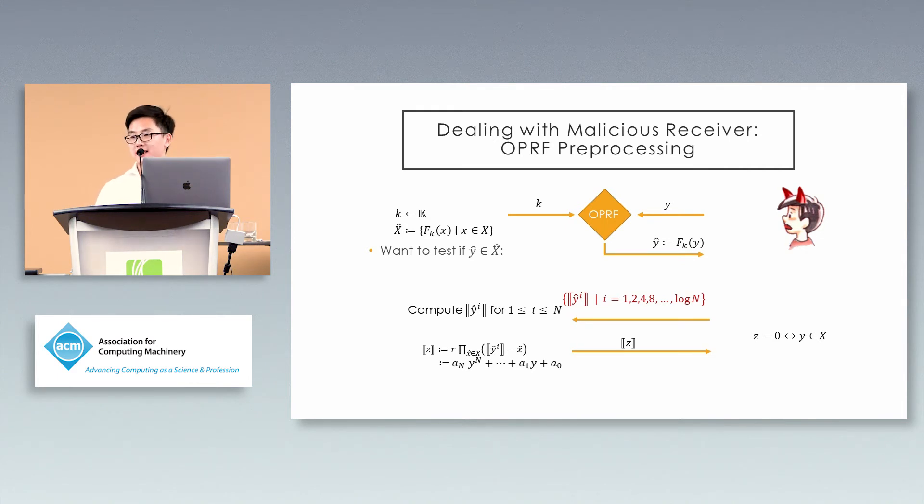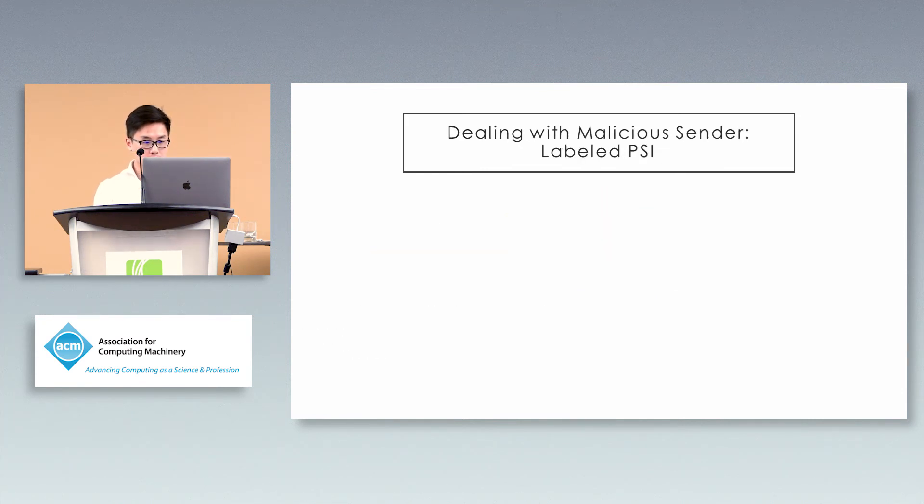Instead of doing the sending phase, we do our usual PSI protocol after the OPRF. The receiver sends information about encryptions of its OPRF values, and the sender evaluates the usual function for set intersection and sends back the result. This gives us security against malicious receiver, because all the items the sender has look pretty random to the receiver, so it cannot obtain useful information about the items.